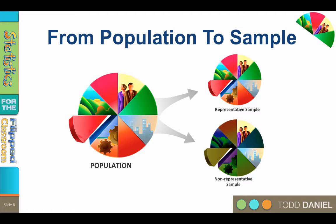No one has done science, and the research was a waste of time and money. And that is why it pays to learn to do research design as well as statistics, so that what we learn from the sample tells us something valuable about the population.